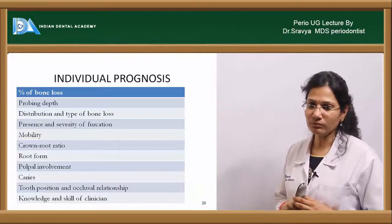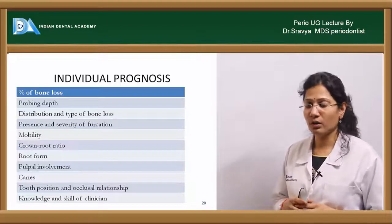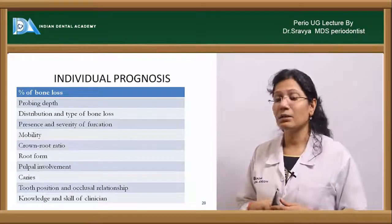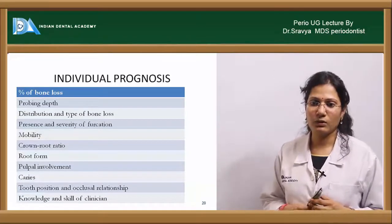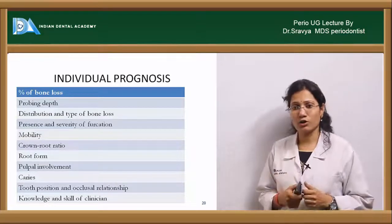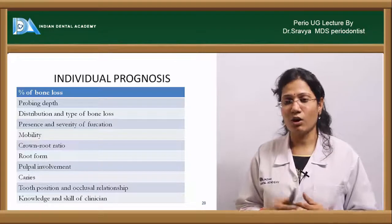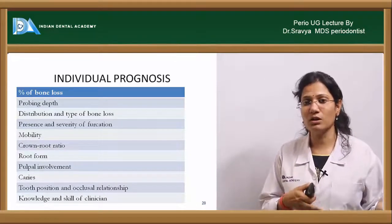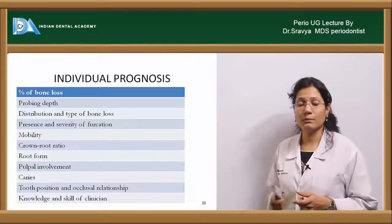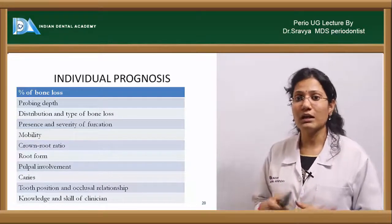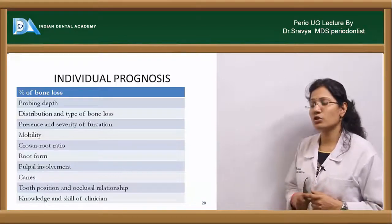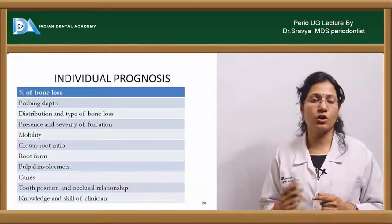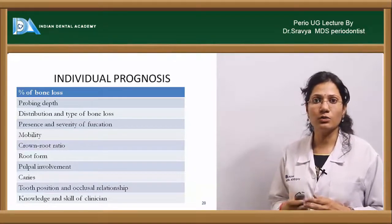Apart from that, the root form — how is the root form of the tooth, whether it's a long root, short root, whether it's a single-rooted tooth or multi-rooted tooth — and then pulpal involvement. If there is already an endodontic problem, whether a periodontal therapy is needed, or whether you can save the tooth by doing endodontic and periodontal treatment. And then caries — if you have subgingival caries or root caries, can you save that particular tooth? Tooth position, occlusal relationship in the arch, and the knowledge and skill of the clinician — all these factors will determine your individual tooth prognosis.